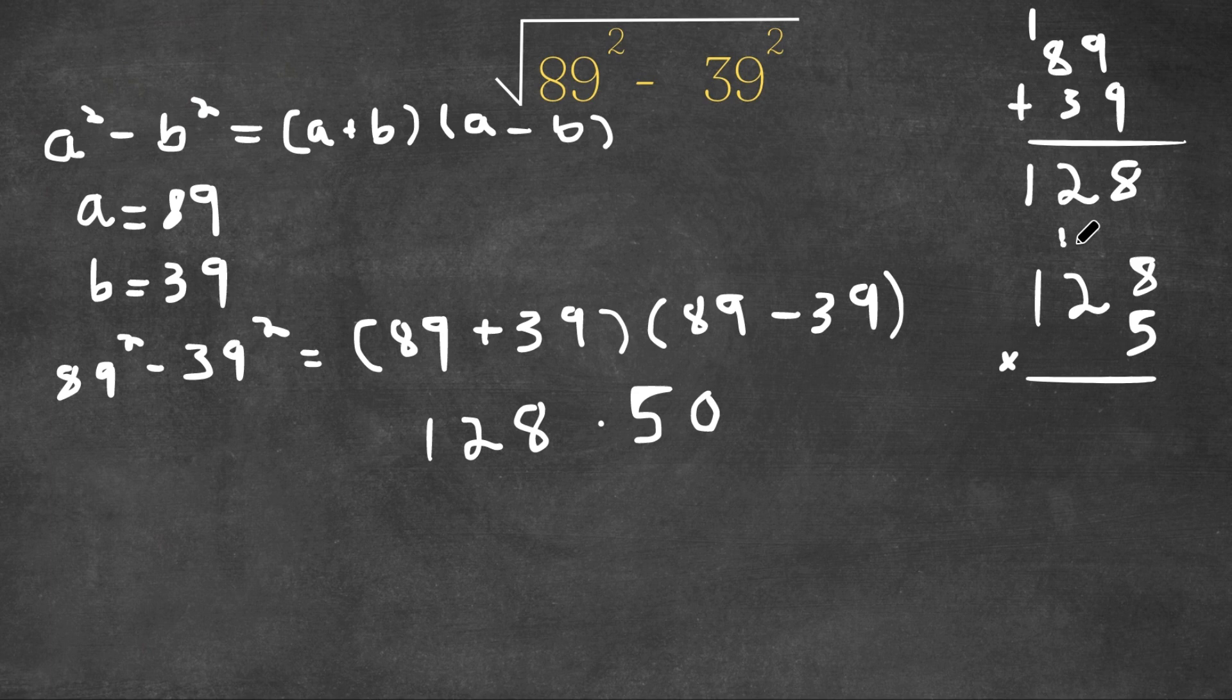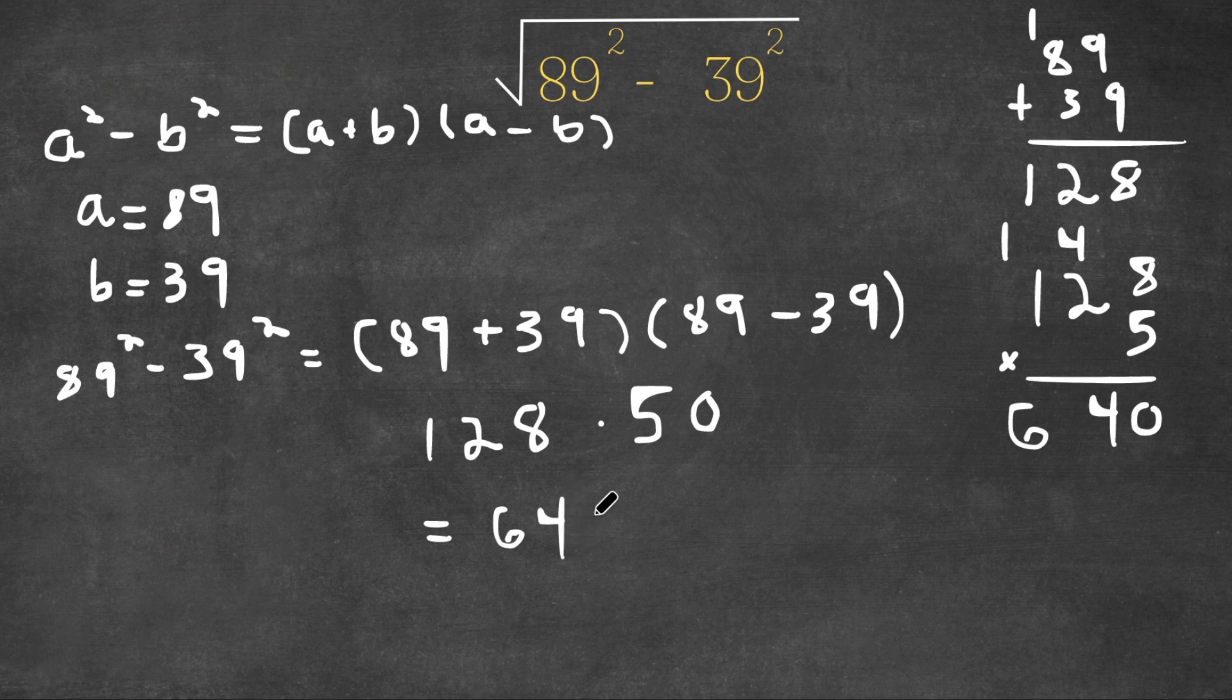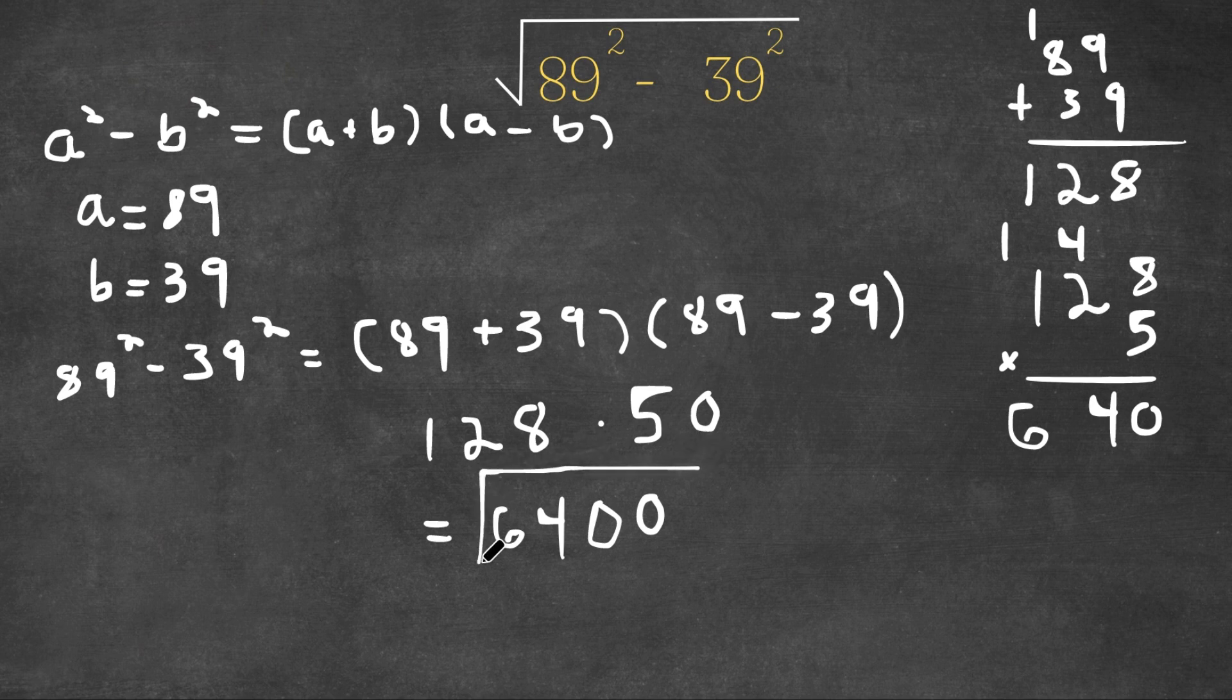8 times 5 is 40. 5 times 10 is 10. 10 plus 4 is 14, so we carry the 1, and 5 times 1 is 5. 5 plus 1 is 6. So we get 640. And now we can add in the 0 that we ignored. So 6400 is our answer.